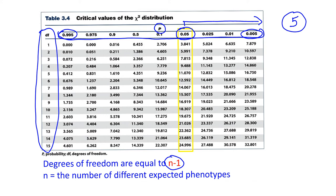So you have to look for other mechanisms that might be involved in determining that difference. However, if the probability associated with your number is higher — 0.1 or above — it means there is a 10% or more probability, up to 99.5%, that chance alone produces the difference between observed and expected. In that case, you do not reject the null hypothesis, because it is probable that chance alone produced the difference.